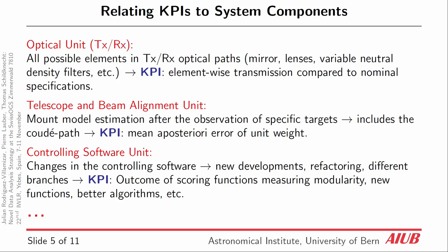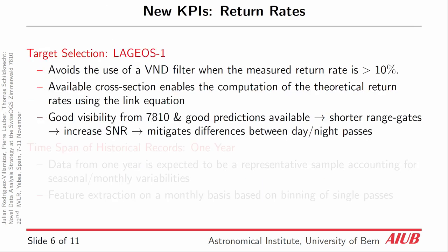Now let's go to the new stuff: return rates. This experiment is very focused on Simmerwald. For Latios, it's a particular target because it allows us to not exceed 10% for the return rates, meaning we avoid the use of the variable neutral density filter. On top of that, we have available the cross-section for Latios 1, so we can compute theoretical estimates of the return rate as a function of the passes.